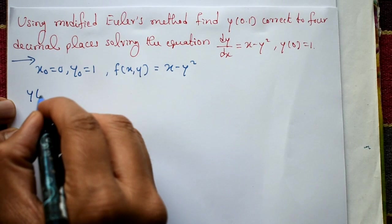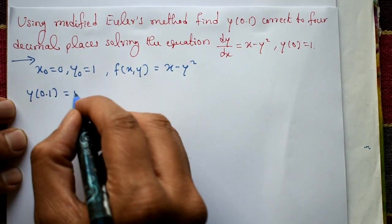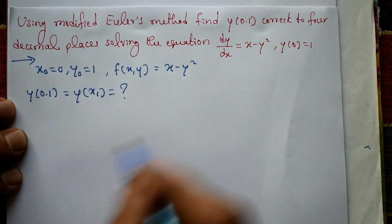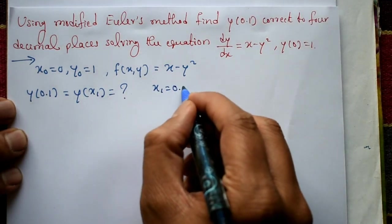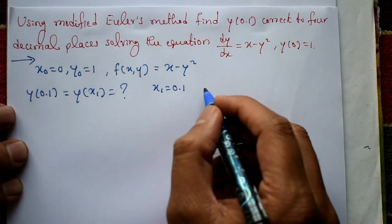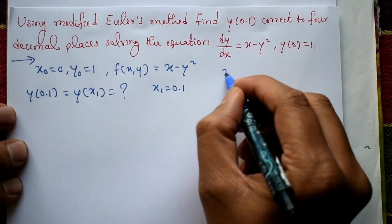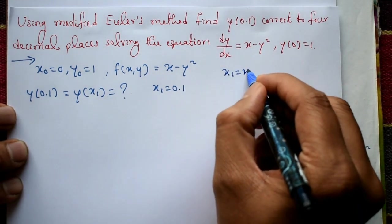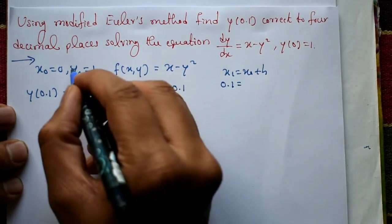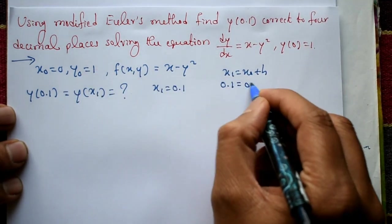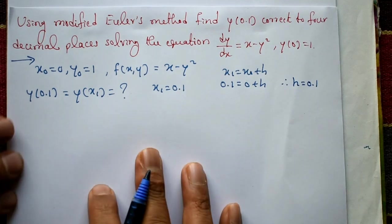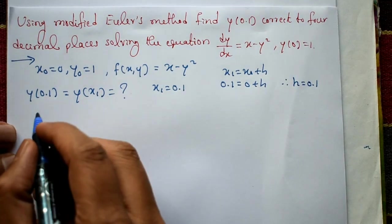We need to find y(x₁) where x₁ = 0.1. Since x₁ = x₀ + h and x₀ = 0, we get h = 0.1.